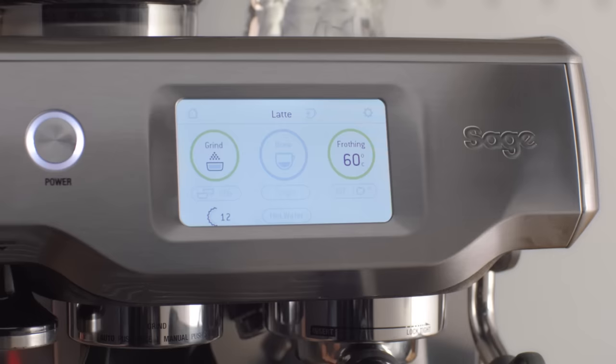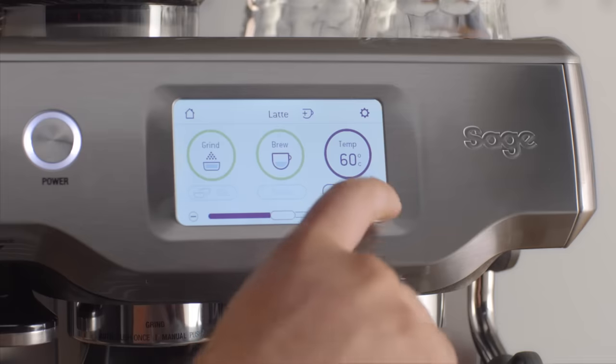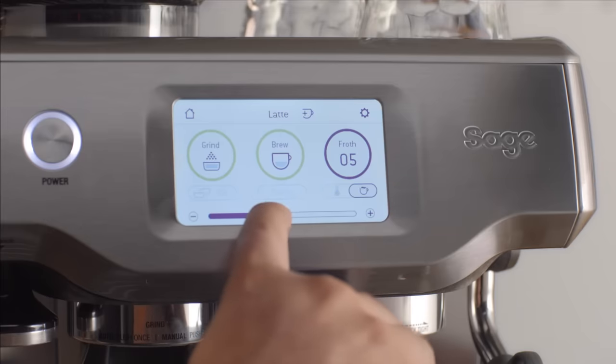When you're creating microfoam milk you need to control temperature and texture for the drink you're making, which is tricky. But now both are controlled for you automatically. You can still adjust both temperature and texture to suit your own taste.